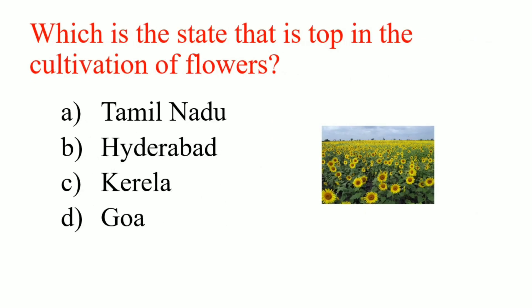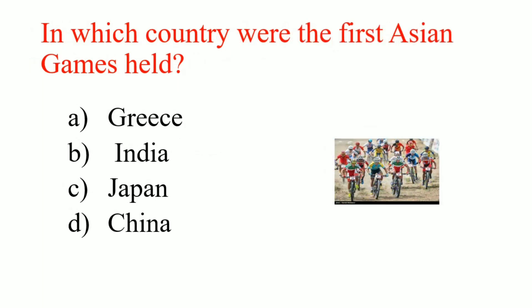Which is the state that is top in the cultivation of flowers? Answer: Tamil Nadu. In which country were the first Asian Games held? Answer: India.